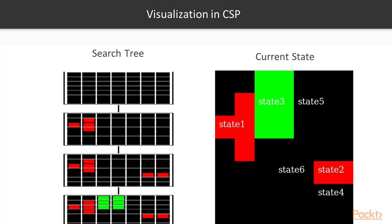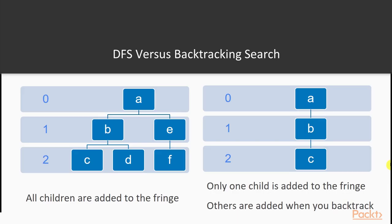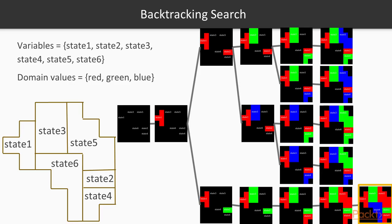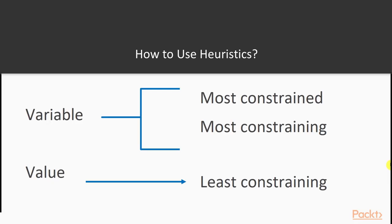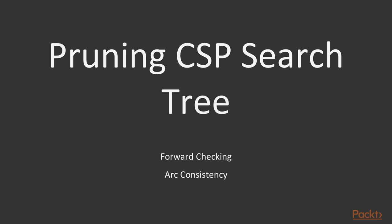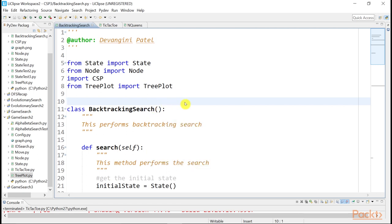We will then see how search tree visualization has to be modified in constraint satisfaction problem search so that the state is drawn in each node of the search tree. Then we move on to transforming depth-first search to backtracking search and see how this works for our application. Heuristics is a guess or estimate of which node would lead to the goal state faster than others — a strategy to reduce the number of nodes explored. We will learn about three heuristics for CSP search, and explore two ways to prune the search trees: forward checking and arc consistency. Finally, we will have an algorithm for the coloring application.